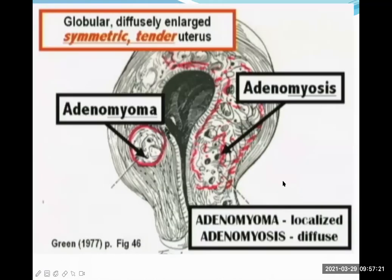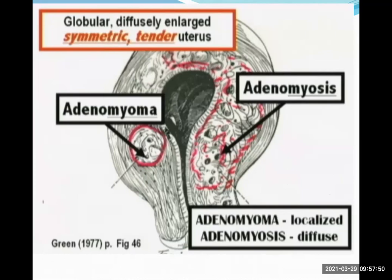This picture shows a single adenomyoma — when multiple, we call it adenomyosis. That's why there is symmetrical enlargement of the uterus in adenomyosis. An adenomyoma is a localized lesion; adenomyosis is the diffuse one causing diffuse, symmetrical enlargement.